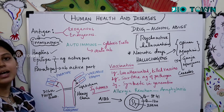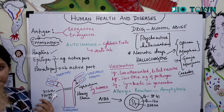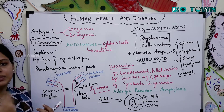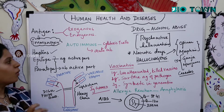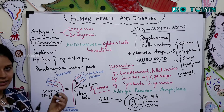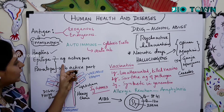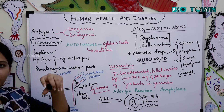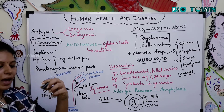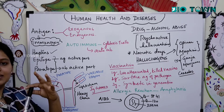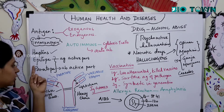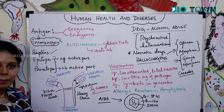Haptens are not antigens but at some point of time they could kindle up the immune response in the body. Next, epitope and paratope: imagine this is an antibody and this is an antigen. The epitope is the active part of the antigen, and the paratope is the active part of the antibody. Both epitope and paratope confine themselves into a proper shape so that they have an affinity with each other.